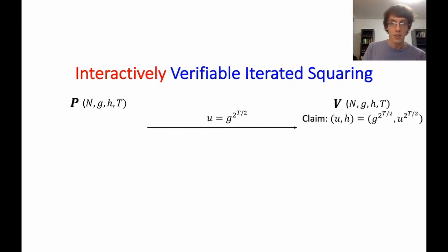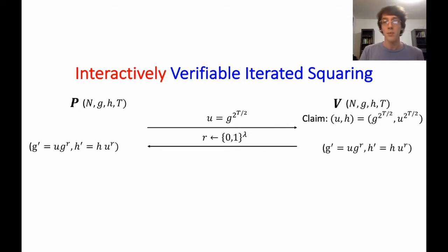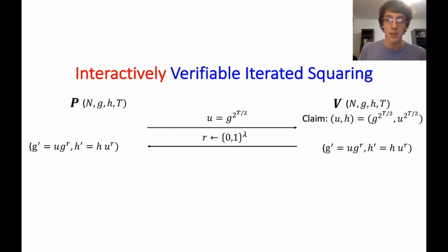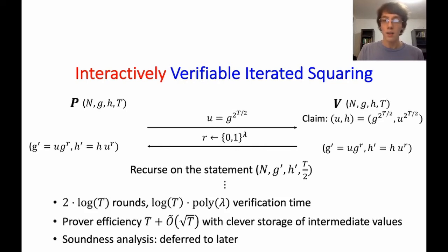The midpoint u implicitly makes two claims: that u is g to the 2^(t/2), and that h is u to the 2^(t/2). This generates two sub-claims of size t/2 that the verifier wants to be convinced of. Instead of asking the prover to prove both, the verifier does a random 2-to-1 self-reduction: it picks a random r as an exponent, and together they compute g' = u · g^r and h' = h · u^r. The prover then shows that h' = g' to the 2^(t/2), giving a recursion.